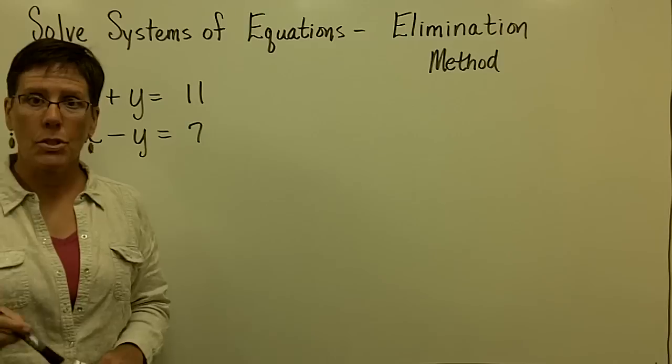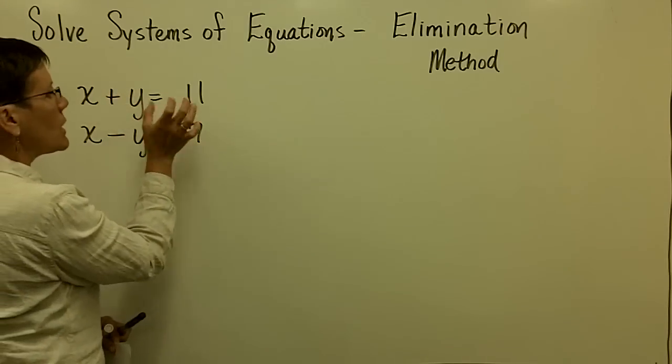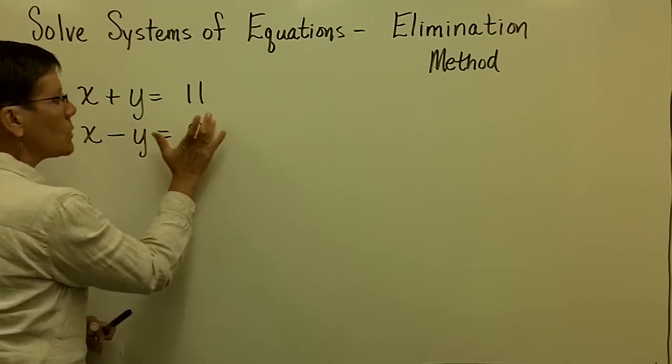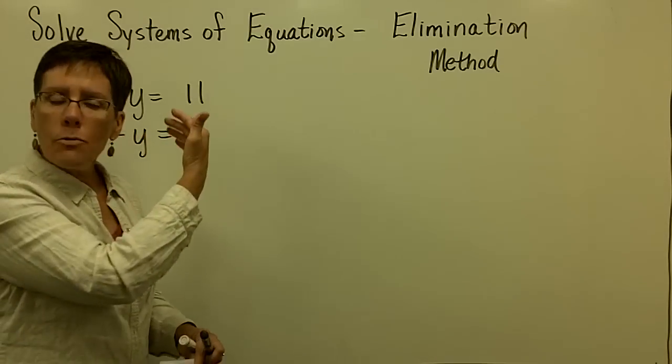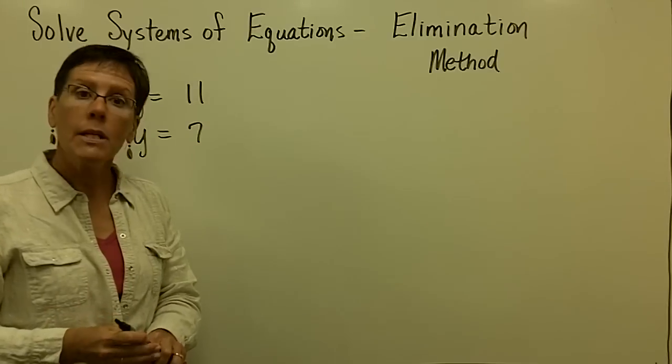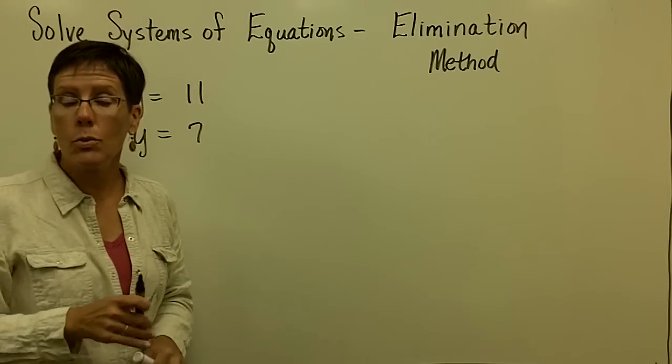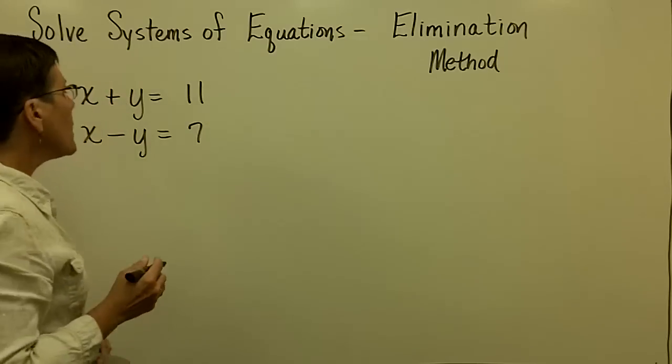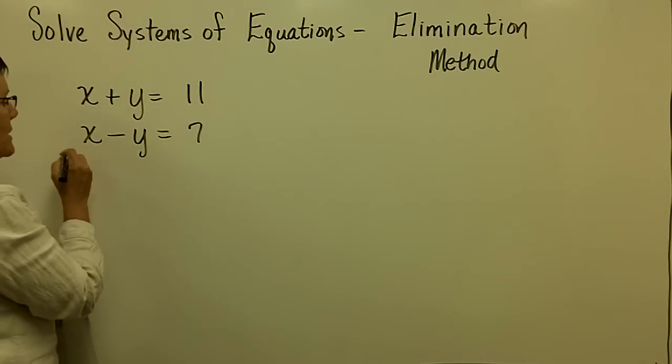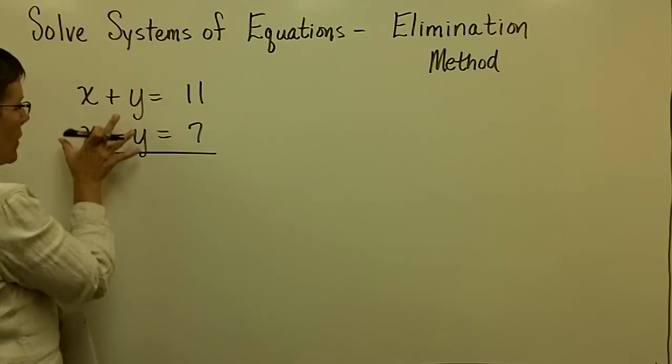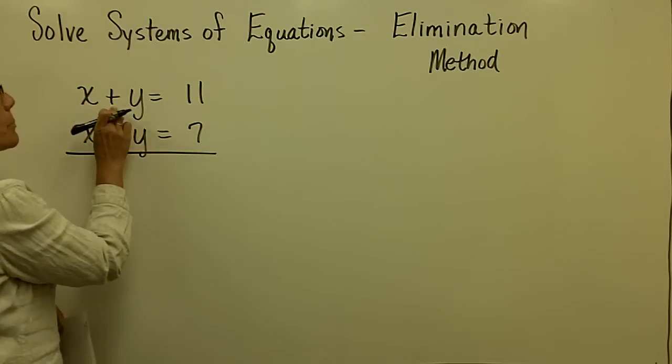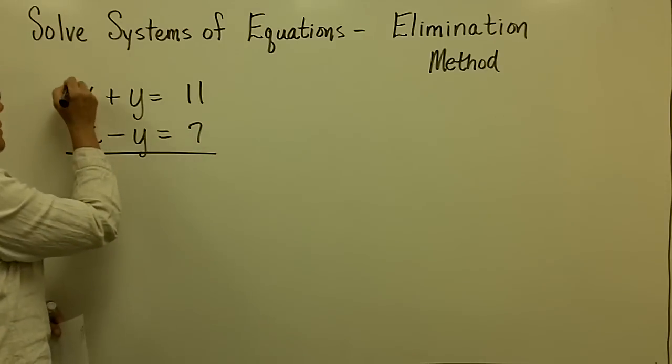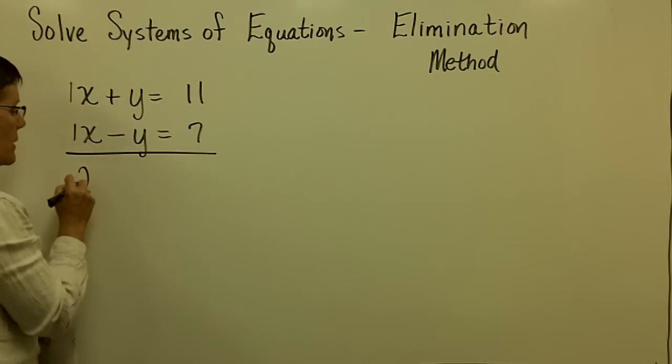What it really amounts to is that you take this statement which is equal to 11 and this statement which is equal to 7 and you vertically add these equal portions to one another so that you can eliminate one of the variables. It's called the elimination method. This one is set up so that if we add this and then this, the plus y and the minus y would add to be 0. But this 1x and this 1x would add to be 2x.